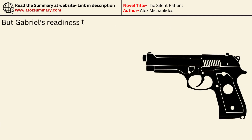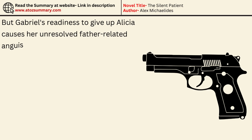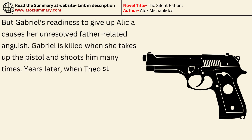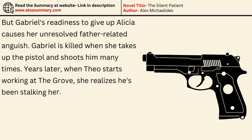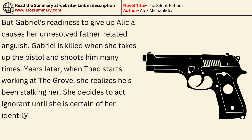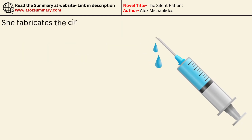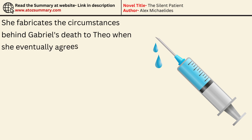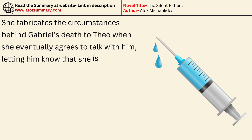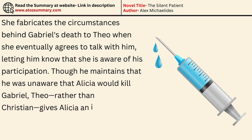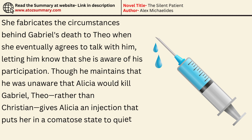But Gabriel's readiness to give up Alicia triggers her unresolved father-related anguish. Gabriel is killed when she picks up the pistol and shoots him many times. Years later, when Theo starts working at the Grove, she realizes he has been stalking her. She decides to act ignorant until she is certain of his identity and understands his reasons for visiting. She fabricates the circumstances of Gabriel's death when she eventually agrees to talk with Theo, letting him know she is aware of his participation. Theo — rather than Christian — gives Alicia an injection that puts her in a comatose state to silence her and conceal his involvement.